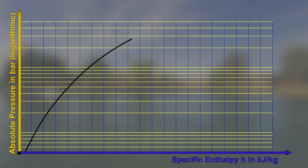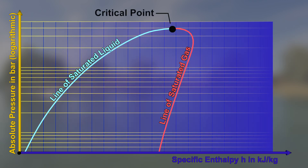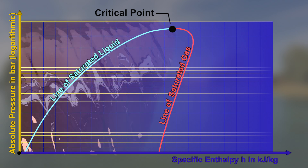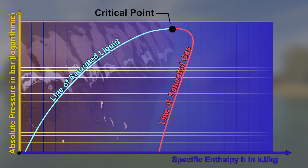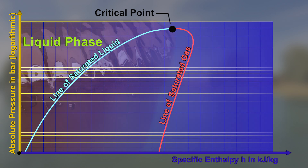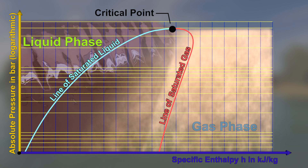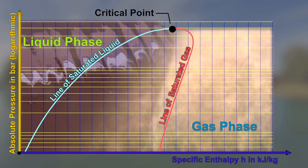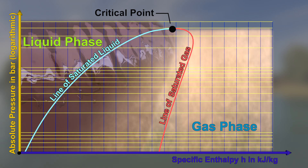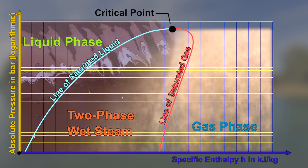A pressure enthalpy diagram contains a dome-shaped area. It stretches from the line of saturated liquid on the left to the line of saturated gas on the right. Both saturation lines meet at the top in a critical point. To the left of the saturated liquid line, the fluid is in a liquid state and the specific enthalpy h is low — this is the area of the liquid phase. To the right of the saturated gas line, the fluid is in a gaseous state and the specific enthalpy h is high — this is the area of the gas phase. In the dome-shaped area between both lines, both the liquid and gaseous phases exist simultaneously, and it is called the two-phase domain or wet steam domain.